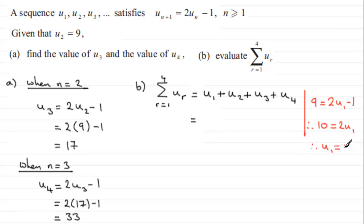So we can pop our terms into this summation here. u₁ then is 5 plus u₂ which we're told is 9 plus u₃ which we worked out is 17 plus u₄ which we worked out is 33, and if we add these terms together what we end up with is 64.